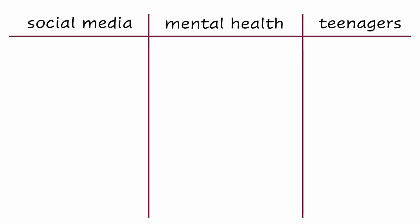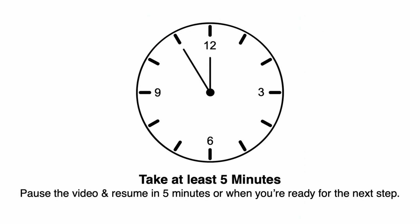Now that we've identified our research question's unique keywords, let's write them out on a fresh piece of paper. In the next step, we will be adding additional ideas for each keyword, so make sure you leave room beneath each one. Basically, you'll be creating a keyword brainstorm table like the one you see here. Take five minutes to apply this process to your research question. Pause the video here and resume when you're ready for the next step.